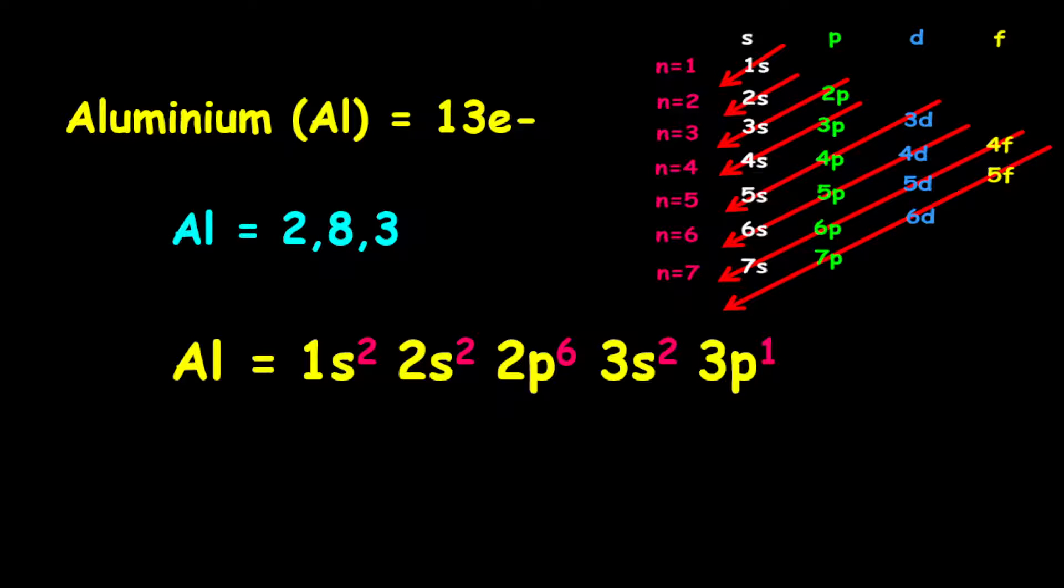For the shortened electron configuration, it is given as neon, and neon represents the inner shells of aluminum. Therefore, the valence electrons will be on the 3s and the 3p orbitals.